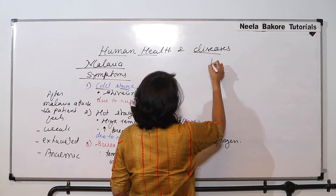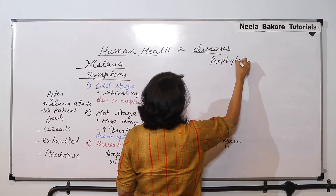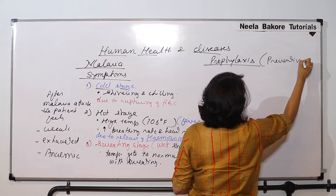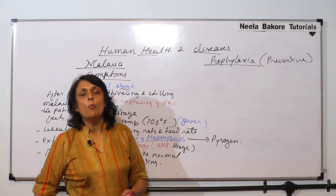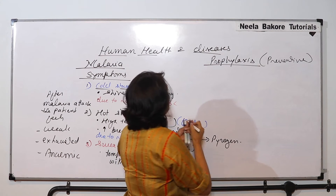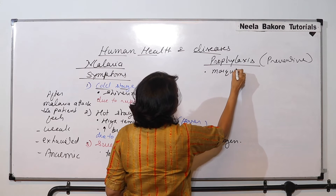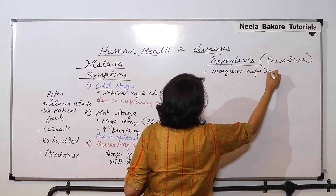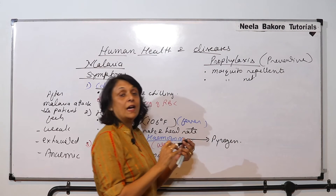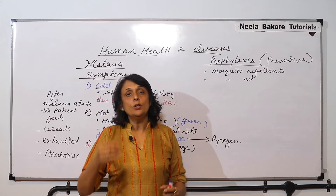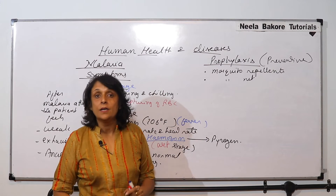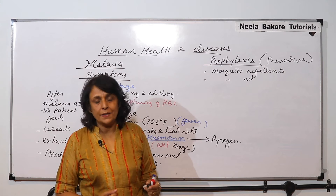Now, what is prophylaxis? Prophylaxis refers to preventive measures which can be taken. The most common thing is to protect yourselves from the mosquito attack. We can use mosquito repellents and insect repellents, use of mosquito nets when sleeping, and wire mesh on doors so that mosquitoes do not enter the house.